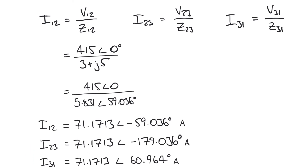The magnitudes of these three currents are all equal — which is a good sign if we're expecting a balanced network; we should expect currents of equal magnitude. Now that we've calculated the phase currents, we have to calculate the line currents. In a star network we didn't have to do this because the line current equals the phase current, but that's not the case here.